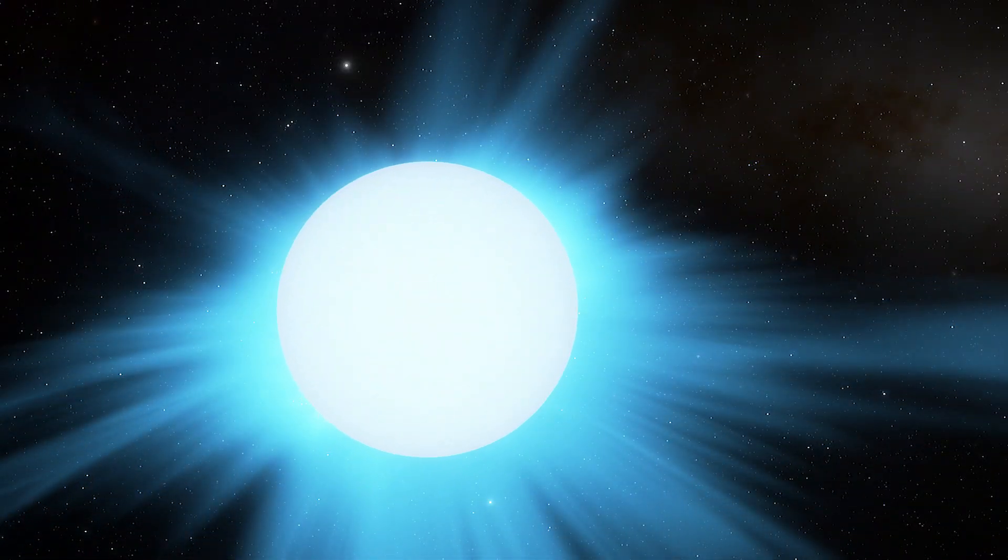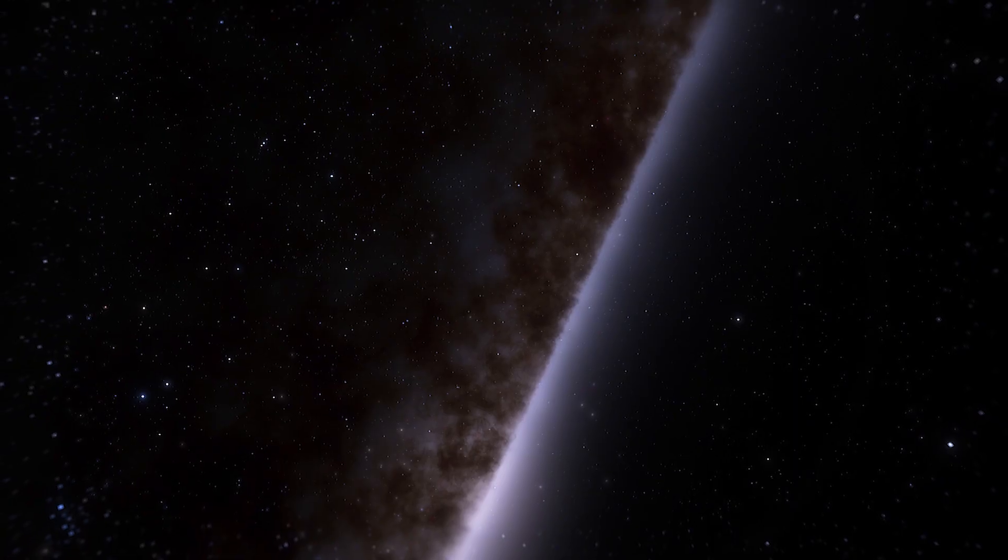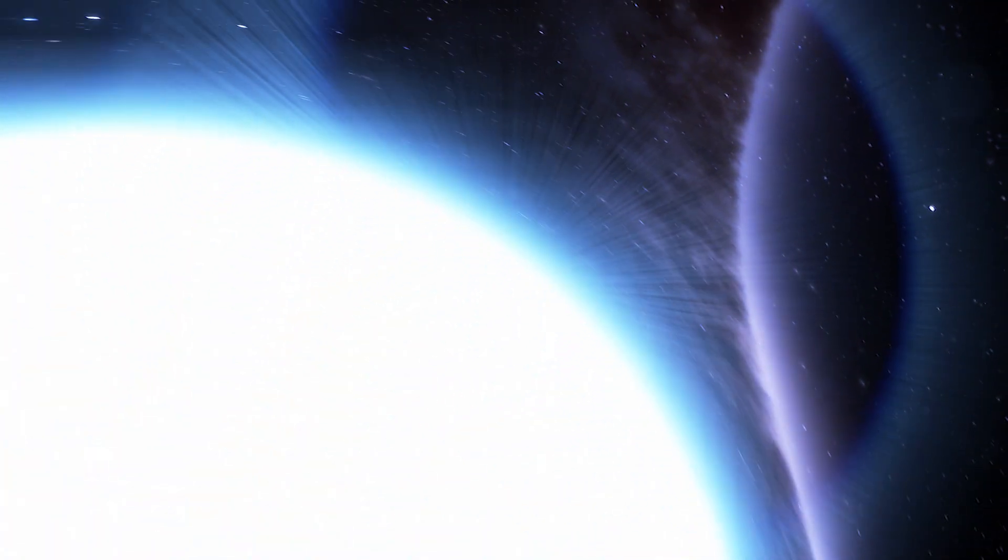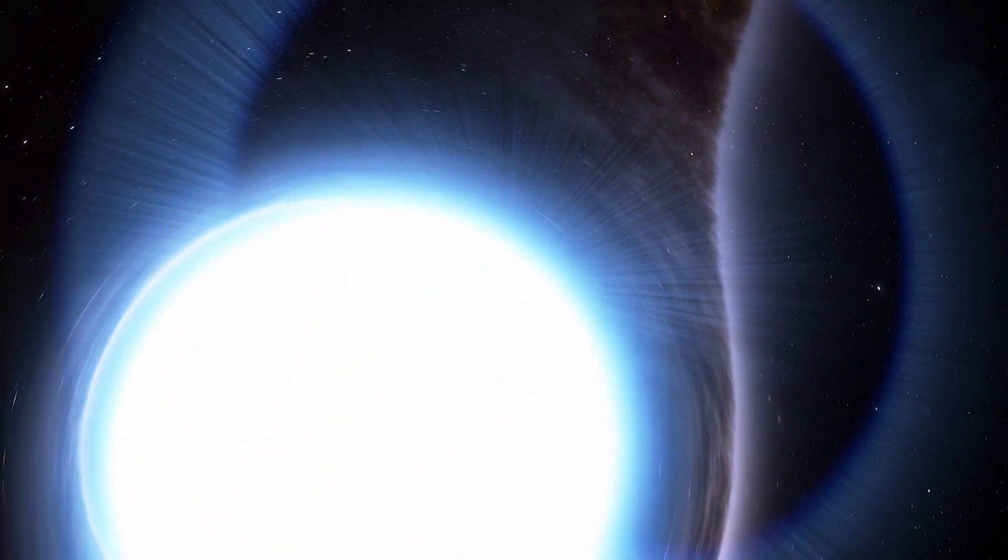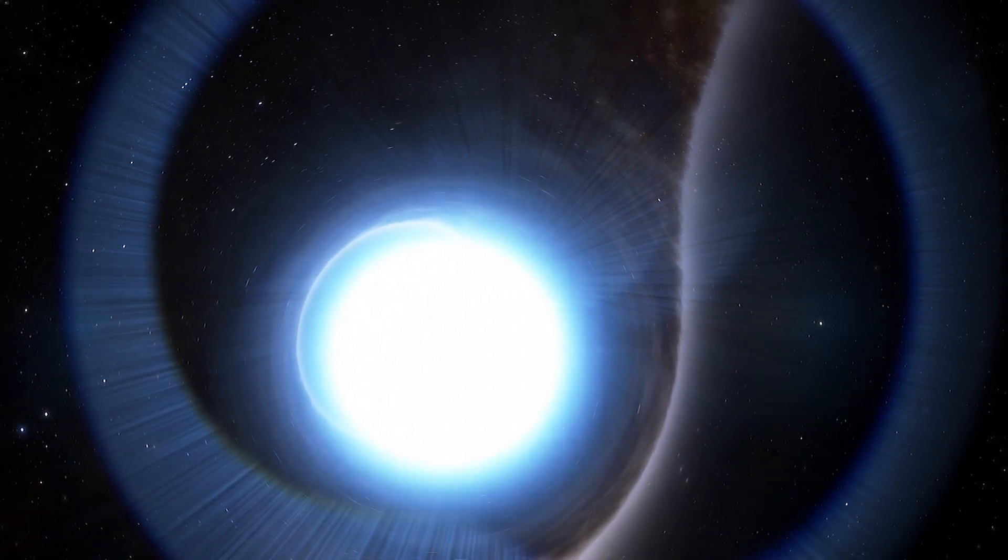Of course, that happens to stars between 10 and 30 solar masses. Neutron stars are the most intensely dense objects in the universe. They might have twice the mass of our sun packed into an object just a few miles across.